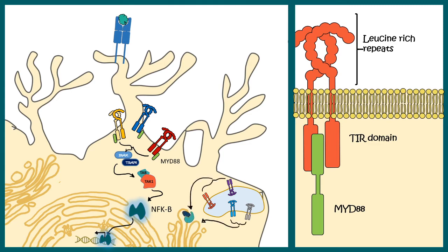There are other TLRs present in endocytotic vesicles. These TLRs signal via a different signaling pathway which involves interferon response factor IRF 7 or IRF 3, also a transcriptional activator which can activate a different set of genes to mediate the response. So depending upon the pathogen, the TLR signaling would also be different, leading to different cytokine production or interferon production.